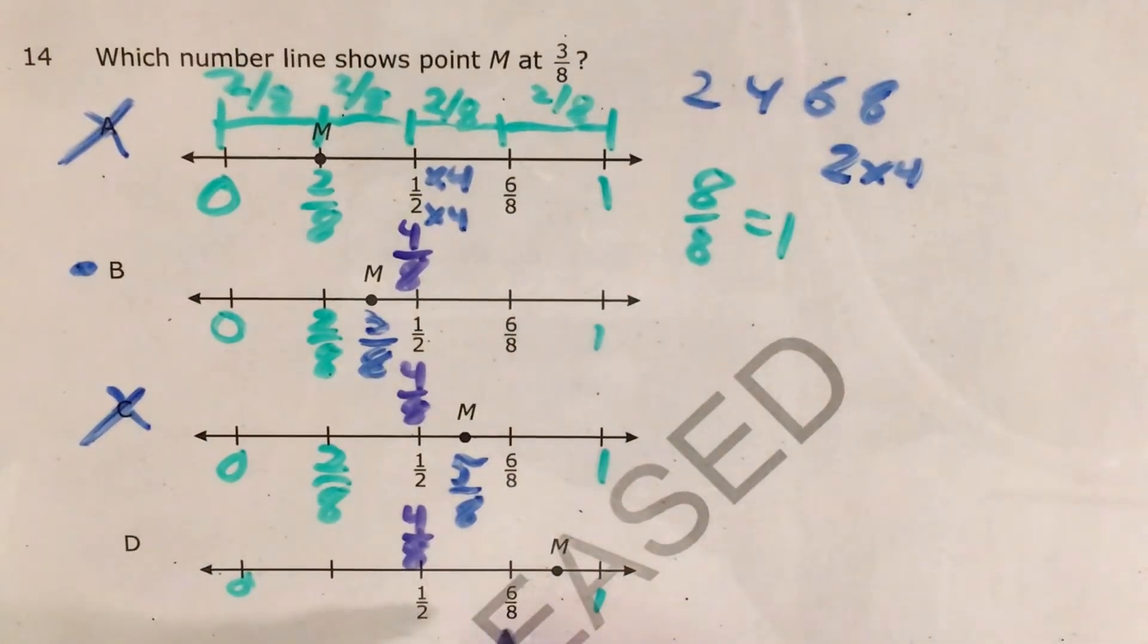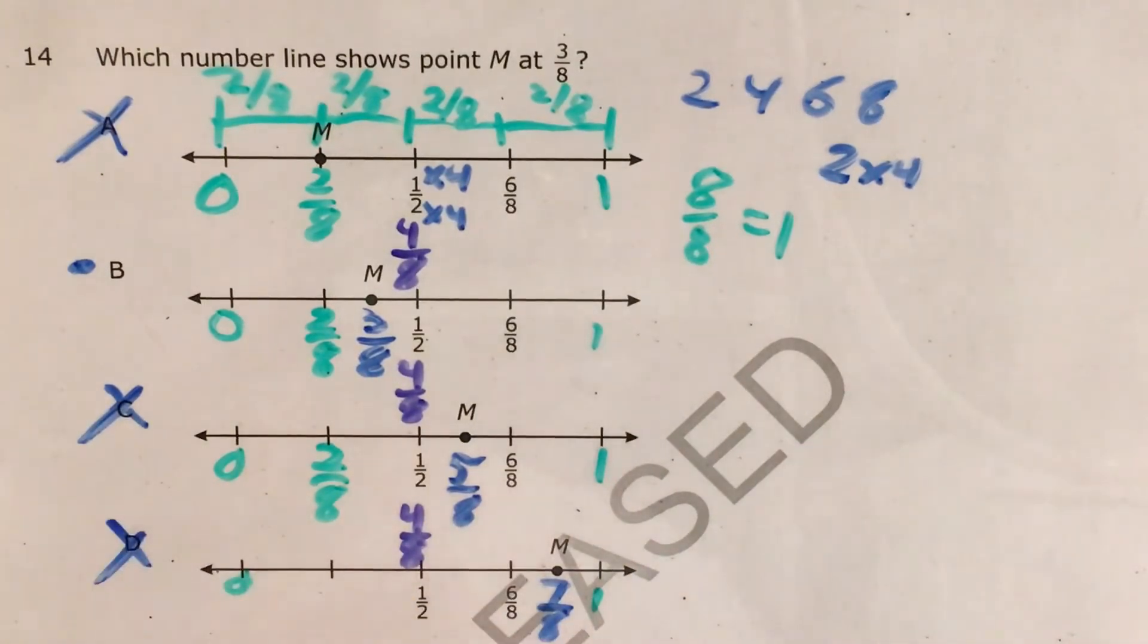And then for choice D, the number right between six-eighths and eight-eighths, or one, is seven. This would be seven-eighths, and again, not what we're looking for.